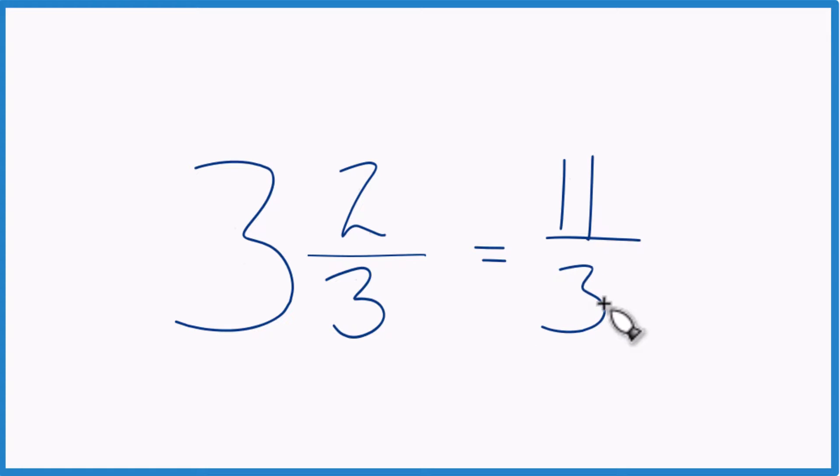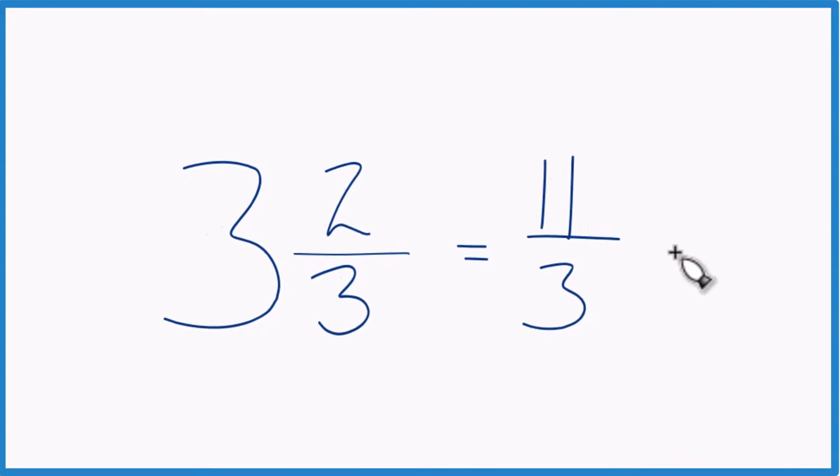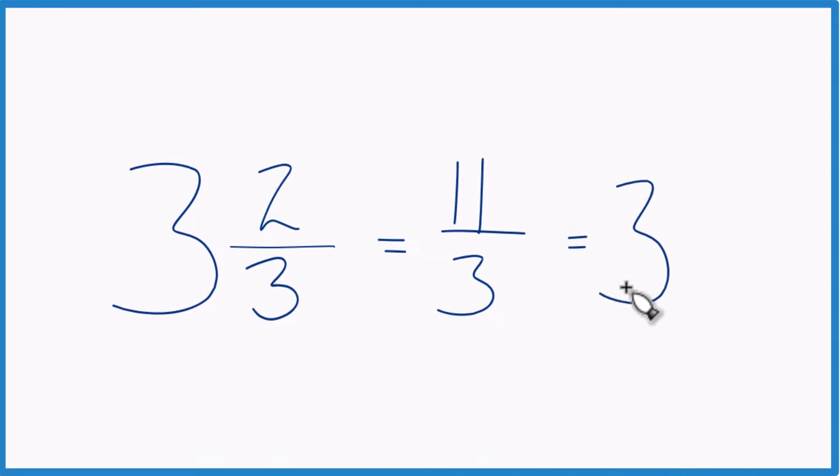We can even check our work here, because 3 goes into 11. 3 times 3 is 9, with 2 left over. Bring the numerator across, 3 and 2 thirds.